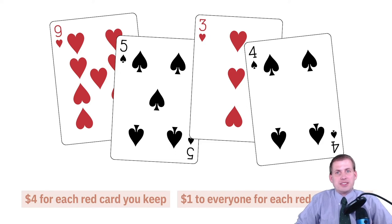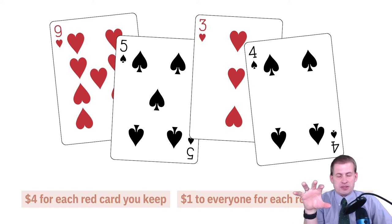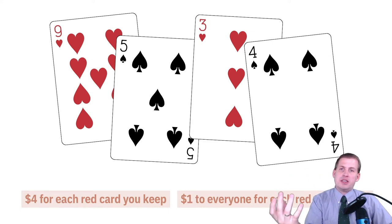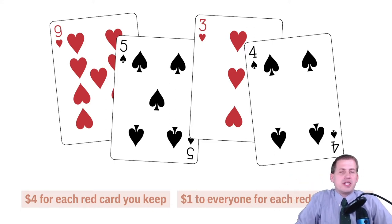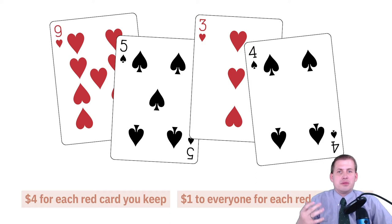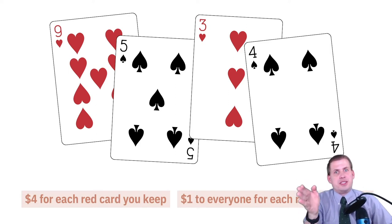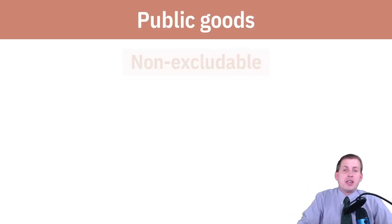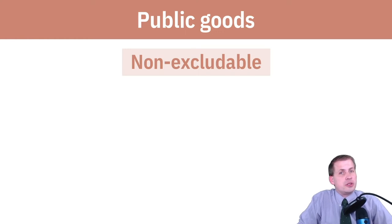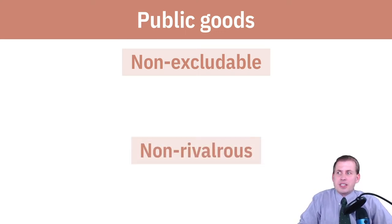This pot of money you donate to in the middle is what is called a public good. You may have heard of public goods when discussing what the public sector provides — like roads or sewage systems. Technically in economics, the term 'public good' has a more specific technical meaning. For something to be a public good, it has to meet two specific requirements: it has to be non-excludable and non-rivalrous.